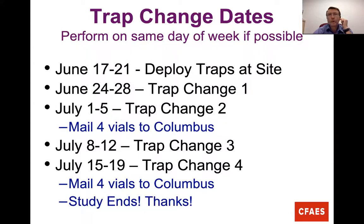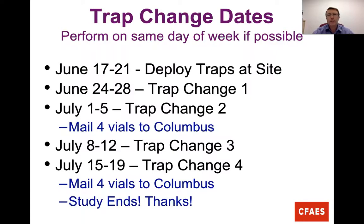The important dates are: the week of June 17–21, put those traps out. June 24–28, change out the drowning solution and collect the first specimens. Do the same the following week. July 1–5, take those four vials with the shipping container and ship them to Columbus. Repeat for the next two weeks — July 8–12 is the third trap change, July 15–19 is the last one, then package and send those four vials. Whatever day you start, try to stick to that same day each week for the four-week period.